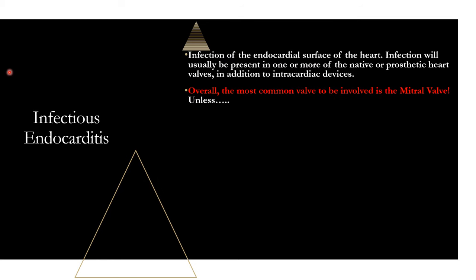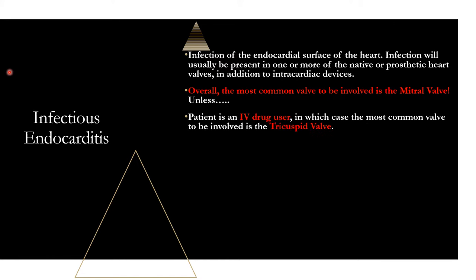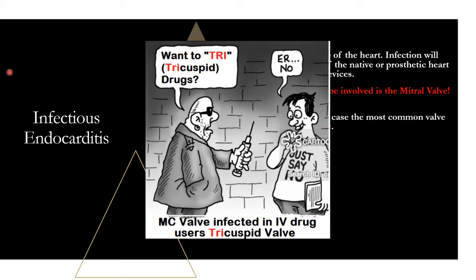The most common valve to be involved is the mitral valve. The exception is IV drug users — in those patients, the most common valve involved is the tricuspid valve. About 90% of patients with right-sided infectious endocarditis are IV drug users. The way to remember this: 'Want to try drugs?' — think 'tri' for tricuspid. IV drug users, most common valve is the tricuspid.